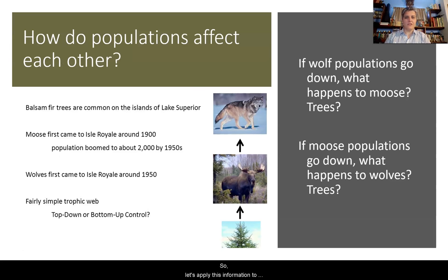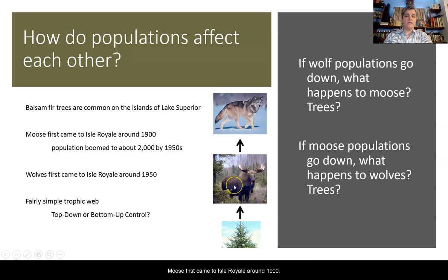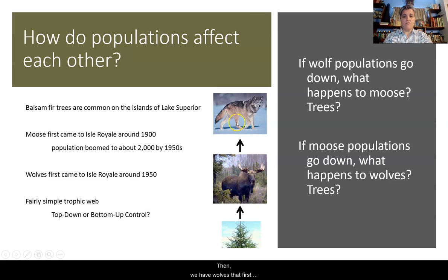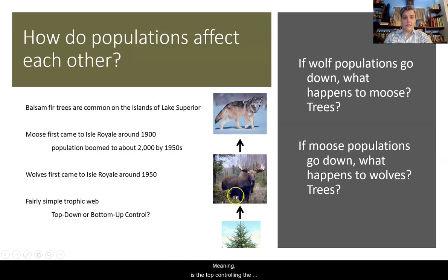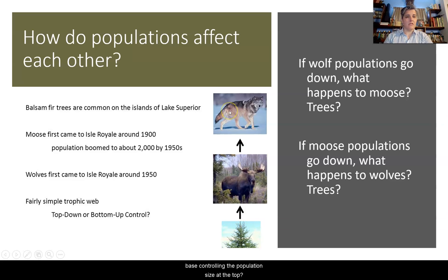Let's apply this information to a different ecosystem. Here we're looking at balsam fir trees, which are common on the islands of Lake Superior. Moose first came to Isle Royale around 1900, and the population boomed to about 2,000. This is a simple trophic web. The question is: is it top-down or bottom-up controlled? Meaning, is the top controlling the populations of those below, or are the populations at the base controlling the population size at the top?